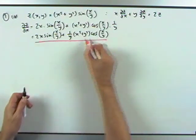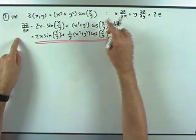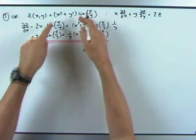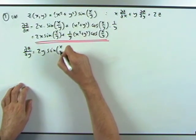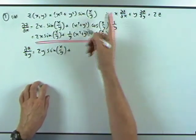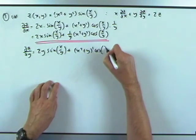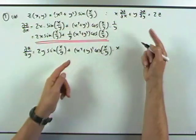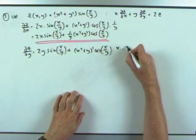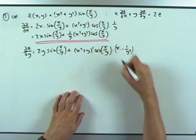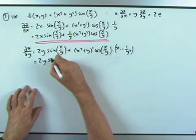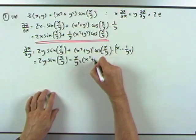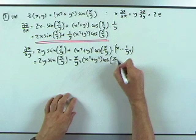Now partial z by y. It's somewhat symmetrical: 2y·sin(x/y) plus, leaving the bracket x squared plus y squared, cosine of x/y, but this time the derivative of the inside x/y with respect to y - treating x as constant - is negative x over y squared. So partial z by y equals 2y·sin(x/y) minus (x/y²)·(x²+y²)·cos(x/y).